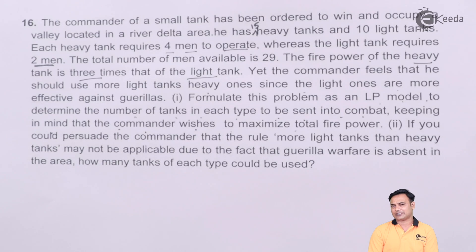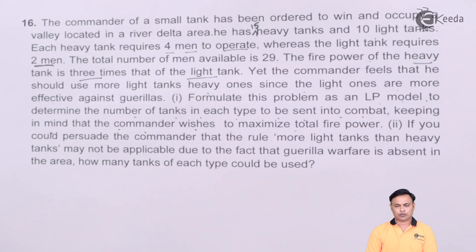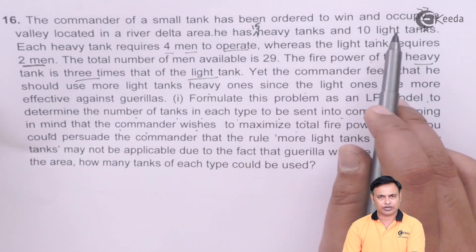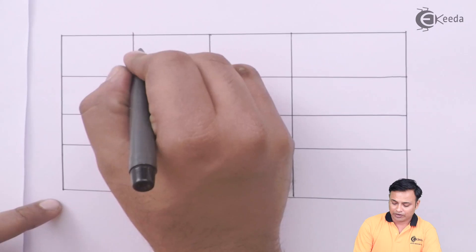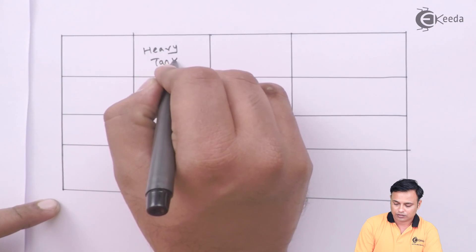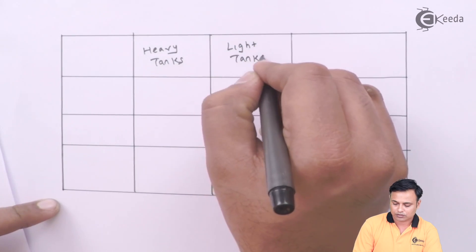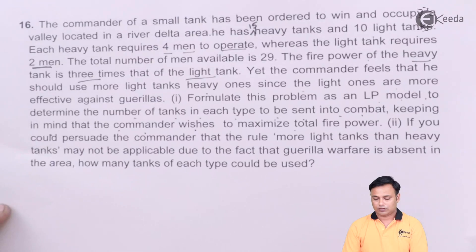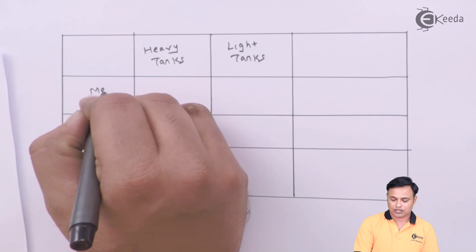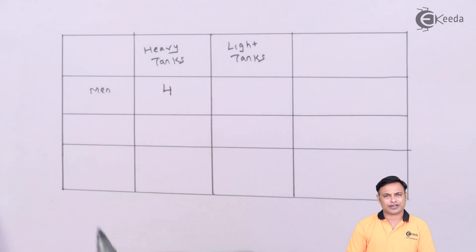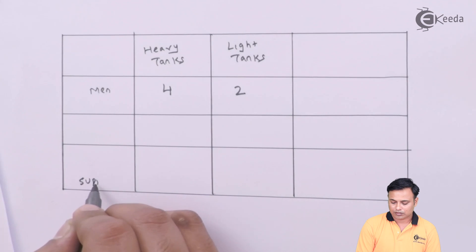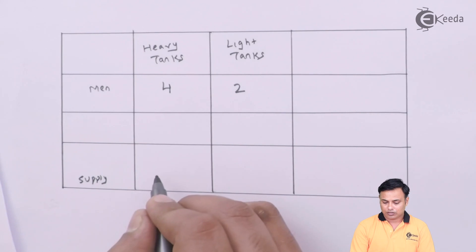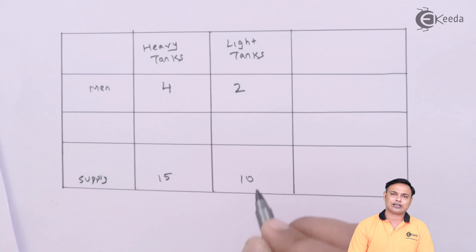We need to decide how many heavy tanks and how many light tanks to use. We have 15 heavy tanks and 10 light tanks. Let's first tabulate the data. The table has heavy tanks and light tanks as columns. Each heavy tank requires four men to operate and each light tank requires two men. The supply of heavy tanks is 15 and light tanks is 10.